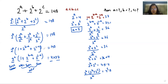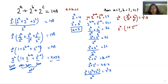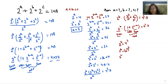So 2^b × (1 + 2^(c-b)) = 4^2 × 9. The term 2^b gives even, and (1 + 2^(c-b)) gives odd (since 2^(c-b) is even and adding 1 makes it odd). Comparing even with even and odd with odd: 2^b = 4^2 = (2^2)^2 = 2^4, so b = 4.